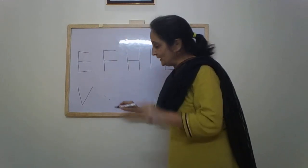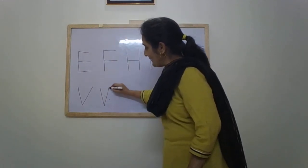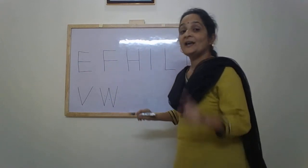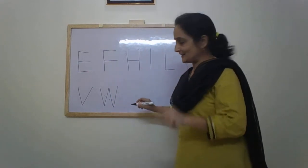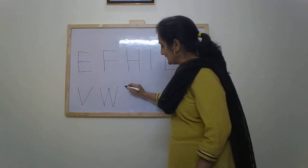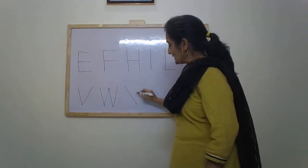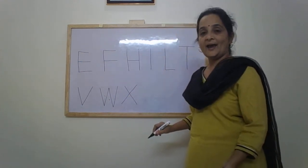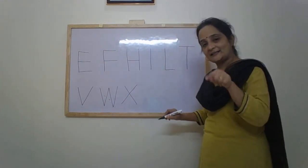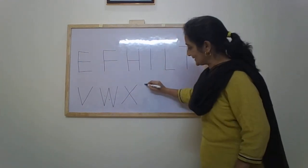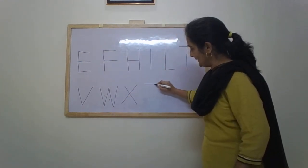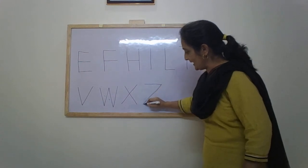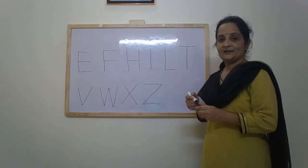W: down, up, down, up — W. X: two slanting lines — X. Y and Z: sleeping line, slanting line, and sleeping line — Z.